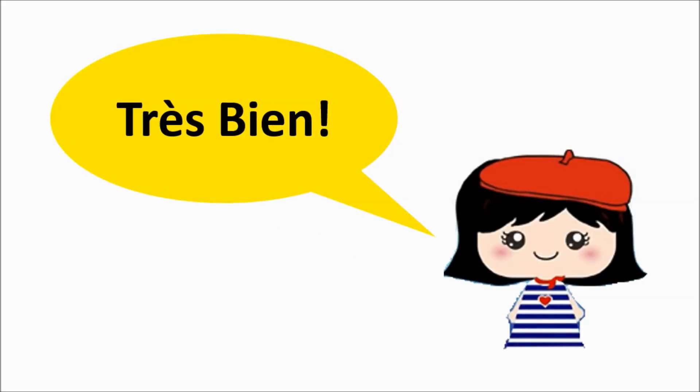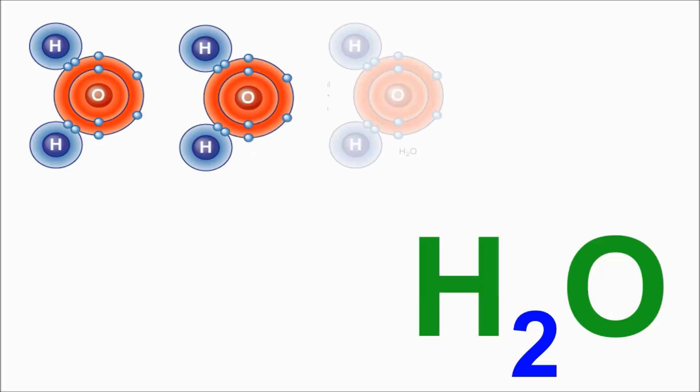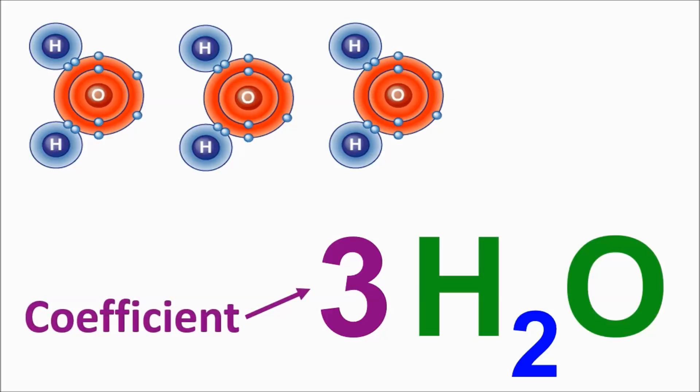Now let's take it to the next level. Sometimes, a specific number of molecules are needed for a chemical reaction. To show this, a number is written in front of the chemical formula. We call this number the coefficient.